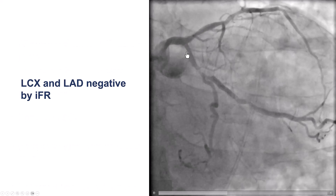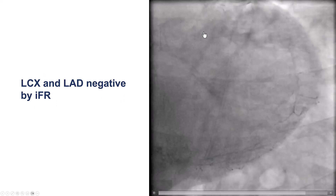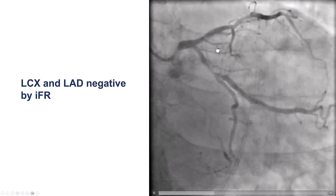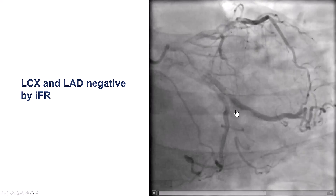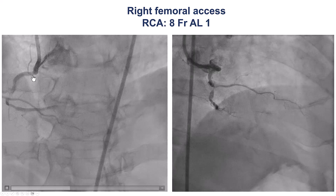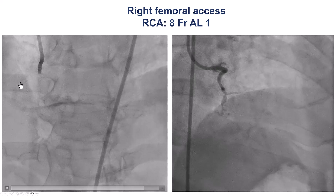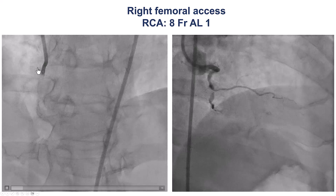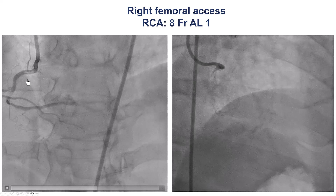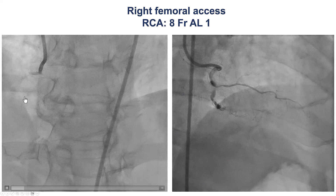The left system was assessed using physiology and there were no significant hemodynamic lesions despite the geographic intermediate lesions. This is the right coronary artery. When the patient came to us, we had an 8 French L1 guide which helps tackling complex lesions, and this is indeed a very complex lesion.